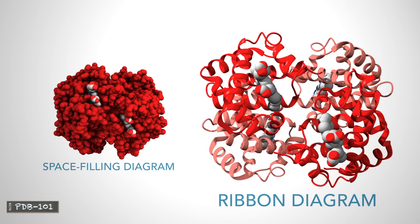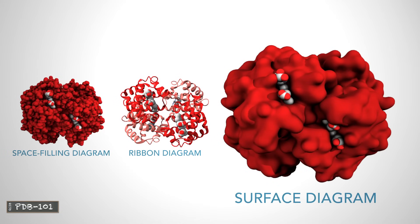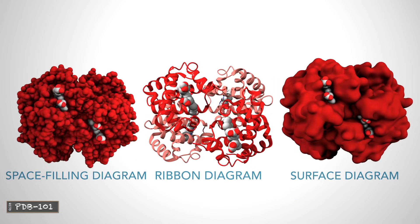This representation, called a ribbon or cartoon diagram, shows the organization of the protein backbone and highlights alpha helices. This surface representation shows the areas in the protein that are accessible to water molecules.